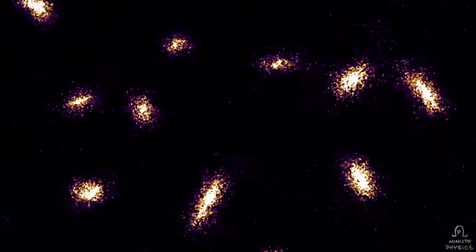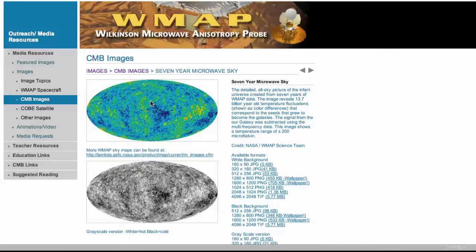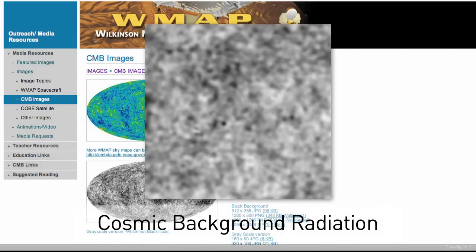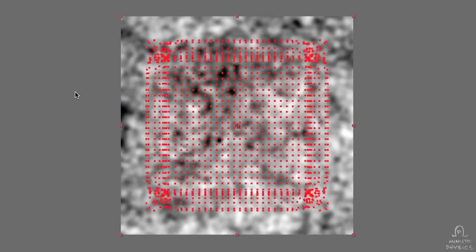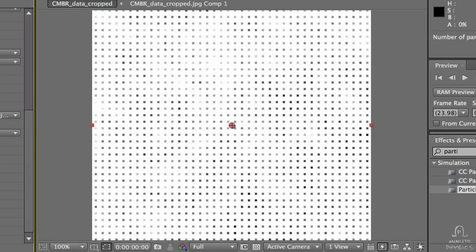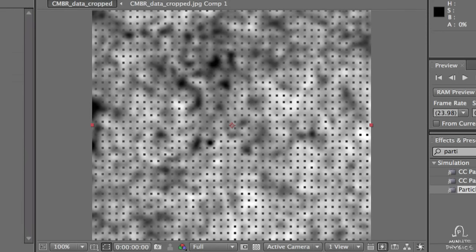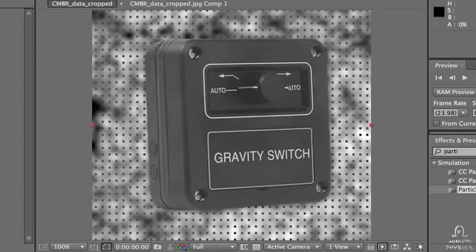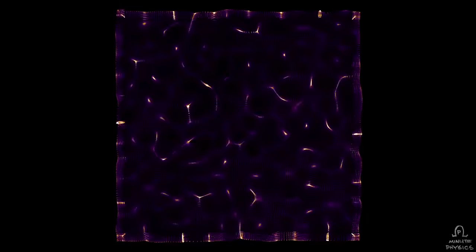So, how did I simulate the universe on my laptop? Simple. I began with a real image of the universe about 13.7 billion years ago, and used it to tell a particle simulator which particles should be lighter and which should be heavier. This simulates the slight variations in density of the early universe. Then, I turned on a little bit of gravity, and watched the particles go.